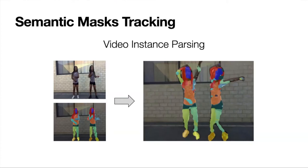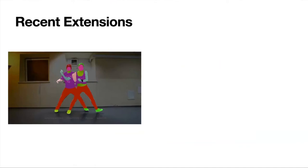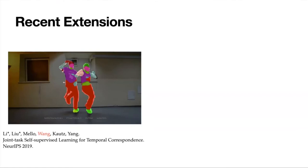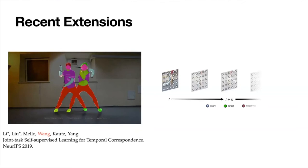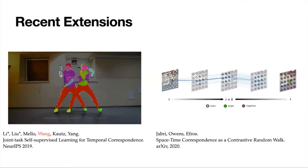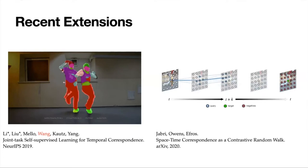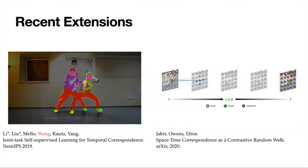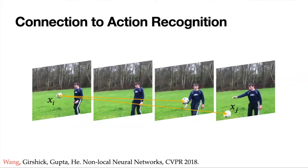There are extensions of our work — one done collaborating with NVIDIA combines video colorization with our cycle consistency loss, and a recent work combines contrastive learning with cycle consistency. Over the past year there has been a lot of improvement in tracking and label propagation with self-supervised learning, getting very close to supervised learning results. Our work is also related to non-local networks, where long-range correspondence helps understand human actions.